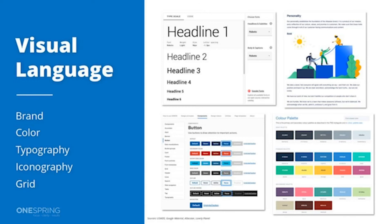In the visual language, you want to build off the brand — showing for example how the logo is used, tone and voice, personality, typography, and iconography. Iconography is huge and can almost become a project unto itself, so again I encourage you to start small. Things around layout, grid, and spacing — all these things you want to standardize wherever possible — make up your overall visual language.